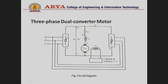Next is the 3-phase dual converter model. As you know, a dual converter means two converters are connected together back-to-back: one bridge works as a rectifier and another works as an inverter. In the dual converter circuit, we use the dual converter on both sides. Full converter circuit one and full converter circuit two are connected in parallel in the armature circuit, and the field winding uses a single-phase or three-phase full converter circuit.